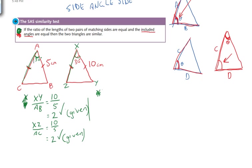I'll just scroll down a little bit here. So we can see that angle CAB is equal to angle ZXY.